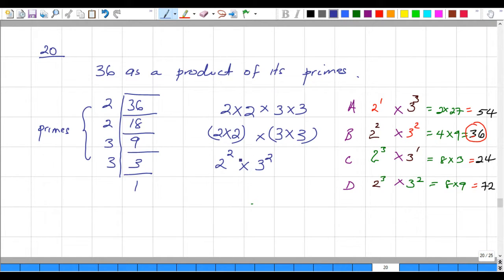All we need to do now is look at our options and we'll see which one matches what we have. And that would be B, because two times two would be four, and four times three squared, nine, would give us 36. The answer for number six, the answer for number 20 is B, two squared by three squared.